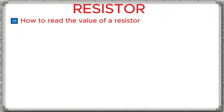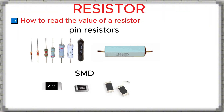How to read the value of a resistor. Normally, small through-hole resistors are marked with colored bands. These bands follow a standard color code used worldwide. For larger resistors, usually 2 watts or more, the value is printed directly on the body. Examples include power resistors or ceramic resistors. In cars, you can often find this type of resistor in the blower motor resistor pack of the air conditioning system.